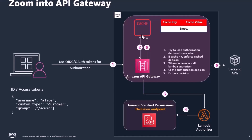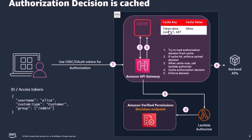In this case, the cache is empty and so it does not find a cached authorization decision. As a next step, it reaches out to the Lambda authorizer, which calls Amazon Verified Permissions to get an authorization decision. This authorization decision is sent back to API Gateway where it is cached.